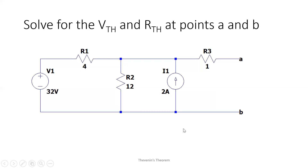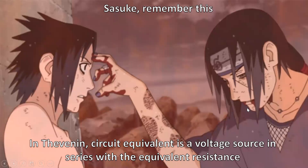For the example, let us solve for the Thevenin voltage and Thevenin resistance at points A and B. Remember this: in Thevenin, the circuit equivalent is a voltage source in series with the equivalent resistance. Always remember — Thevenin voltage source, series equivalent resistance.